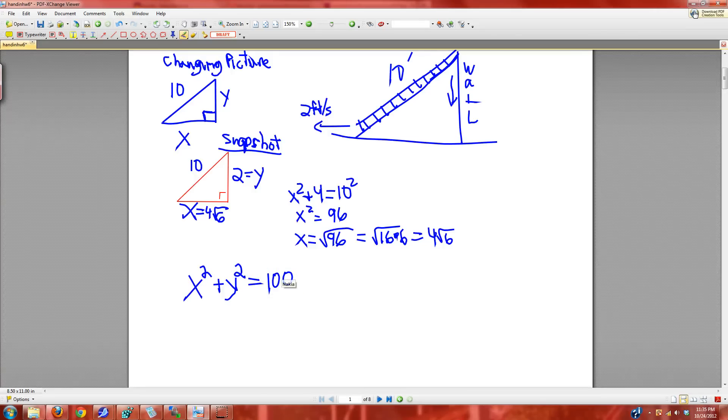And so we take the derivative with respect to time. We get 2x dx/dt plus 2y dy/dt and that's gonna be equal to 0.